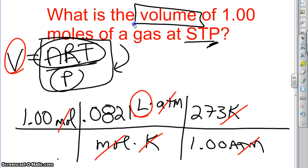And so if I do that, I take the 1.00 times the .0821 times the 273 and divide it by the only number on the bottom is our one. And when you do that, when you're older, you'll understand why I knew this already. It's 22.4 liters.